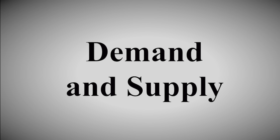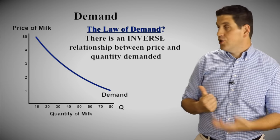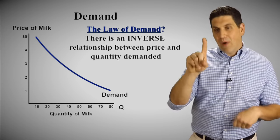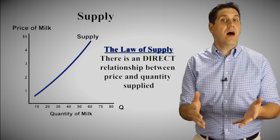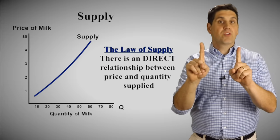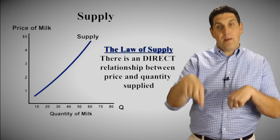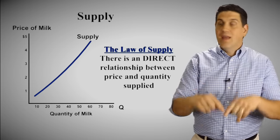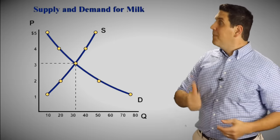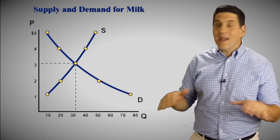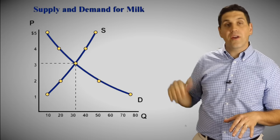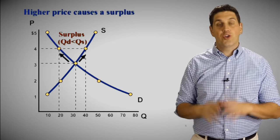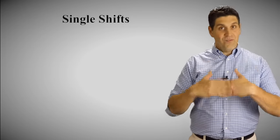Unit one sets the foundation for everything later. It starts with demand and supply. Demand is a downward-sloping curve showing the law of demand: when price goes up, people buy less; when price goes down, people buy more. There's also the law of supply: when price goes up, producers produce more; when price goes down, they produce less. Together they form equilibrium. Note that price does not shift the curve — it moves along the curve — creating either a shortage when price is low or a surplus when price is higher. Understand when there are actual shifts: demand can go up or down, supply can go up or down, and the graph tells you exactly what happens to price and quantity.